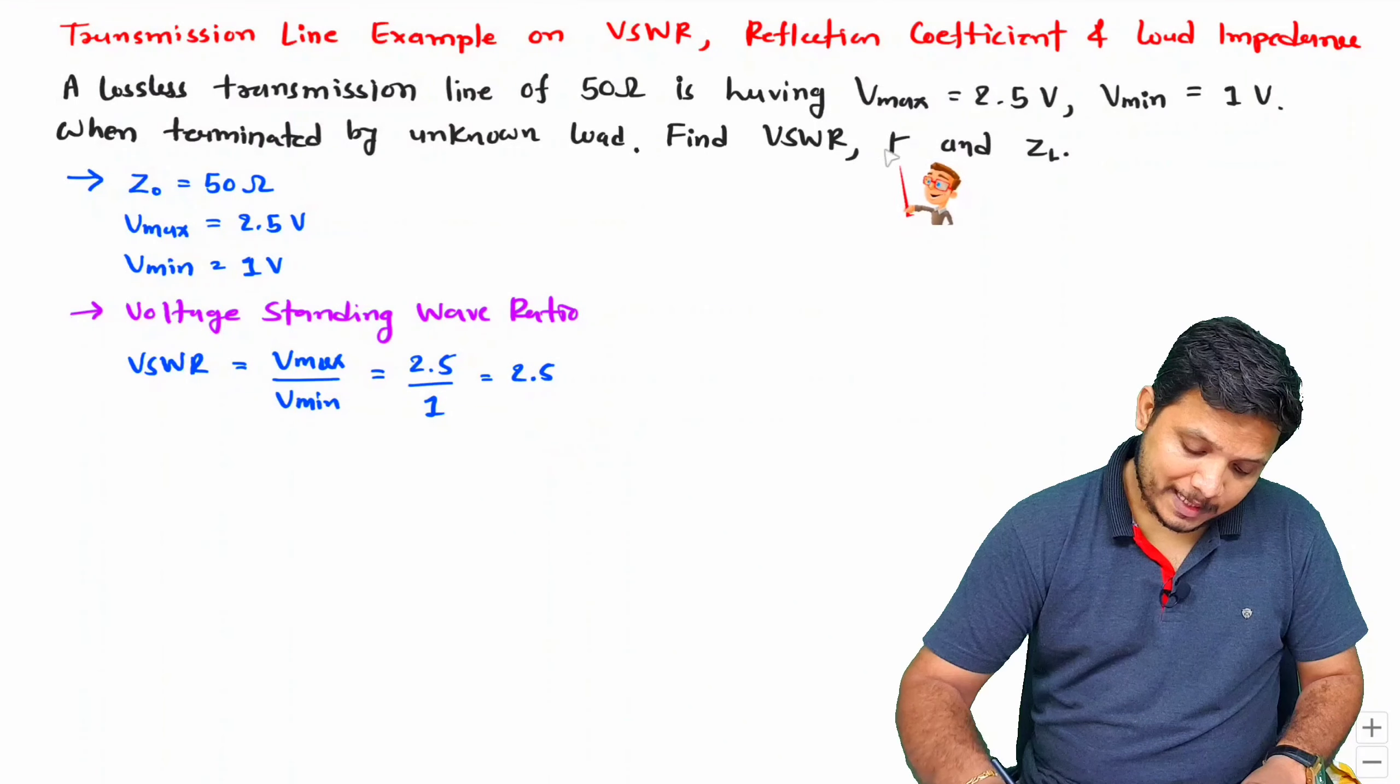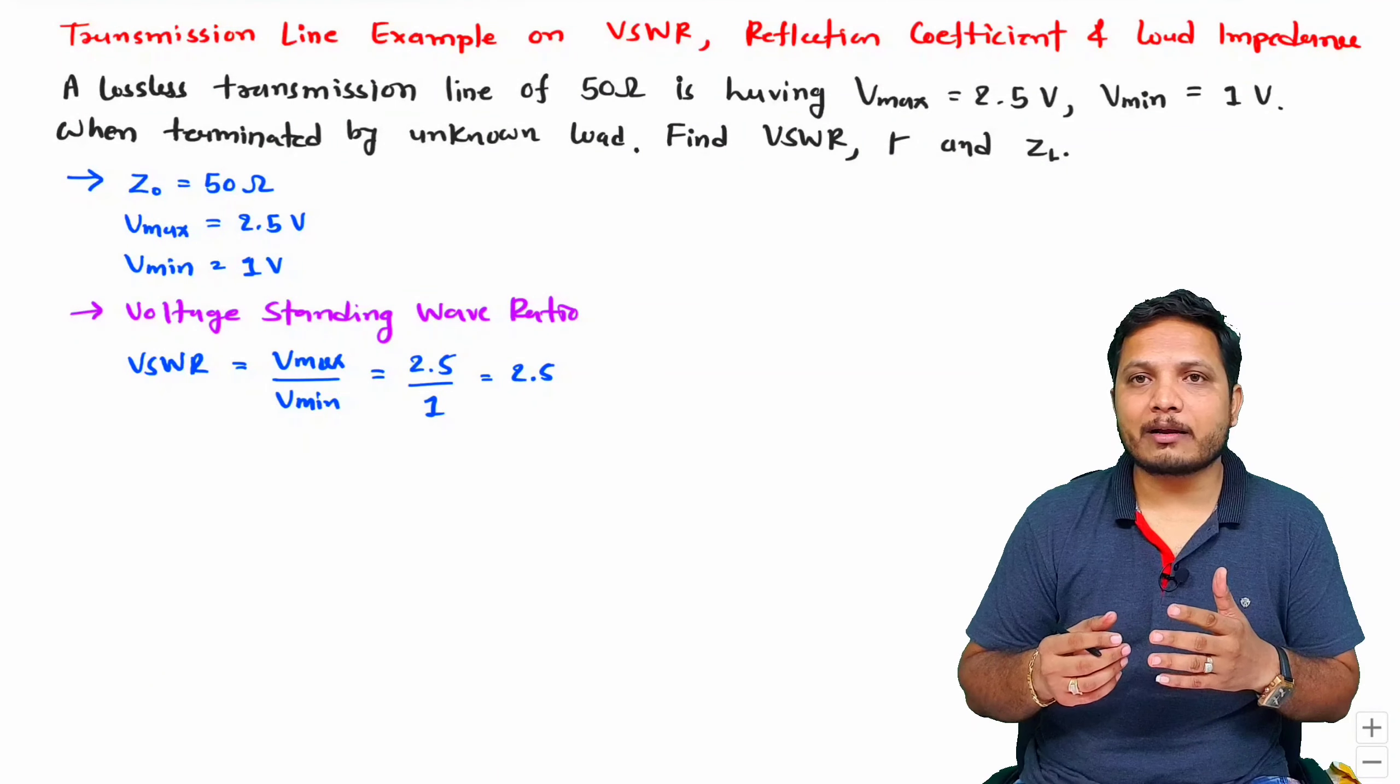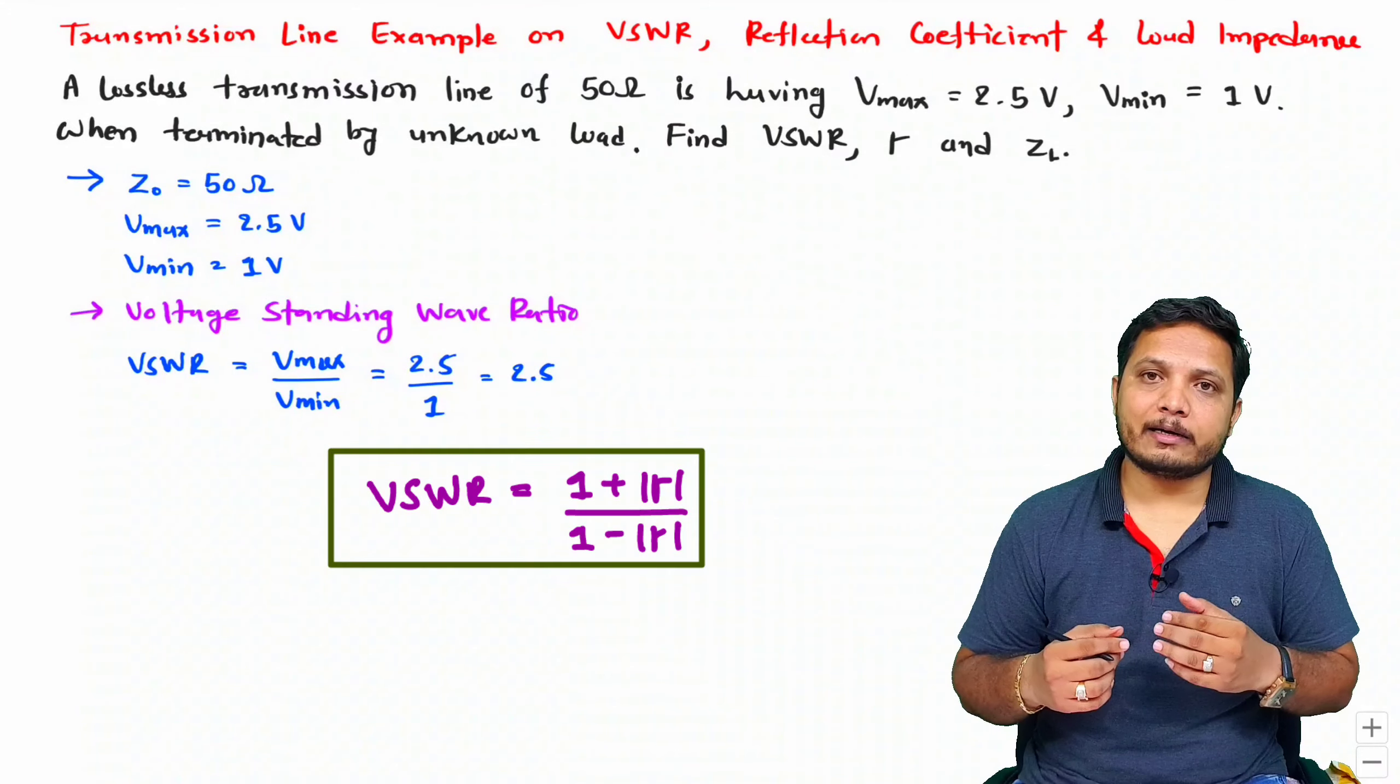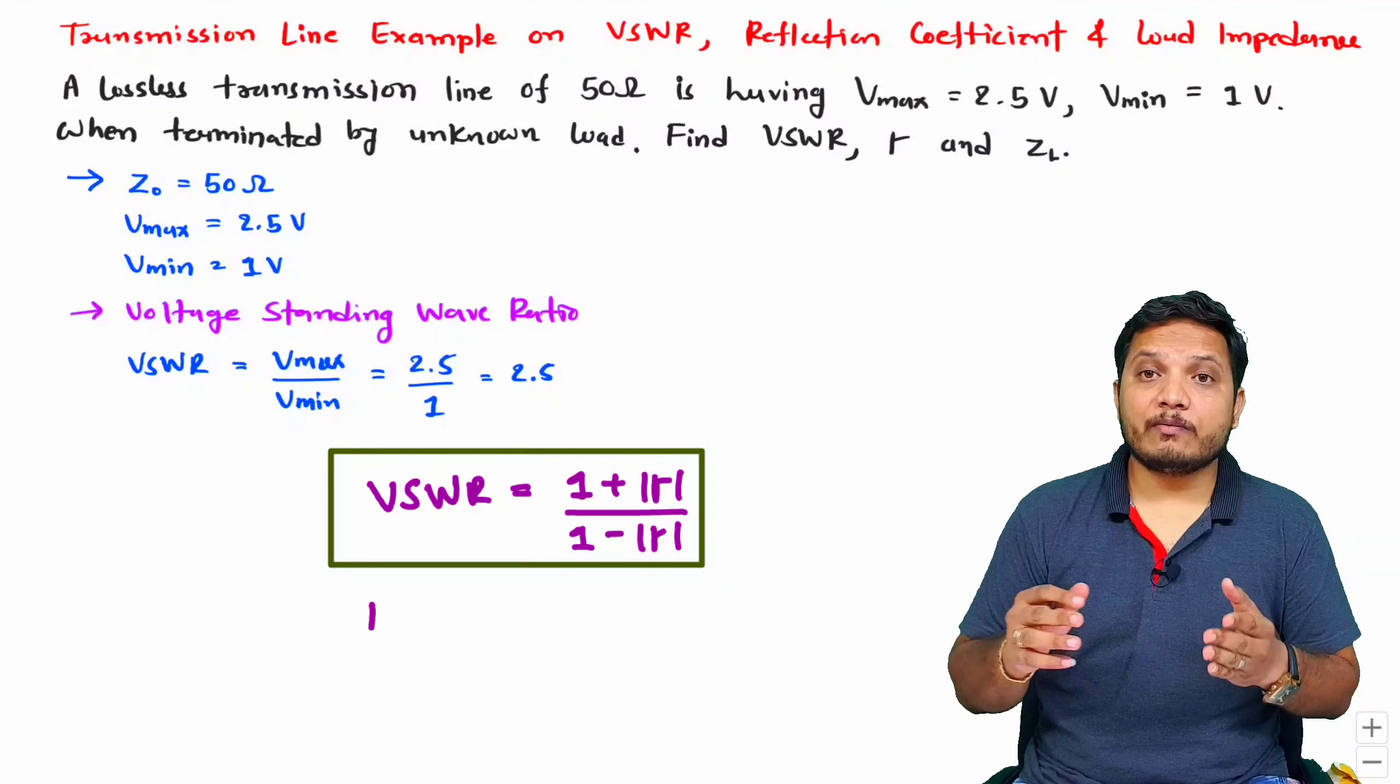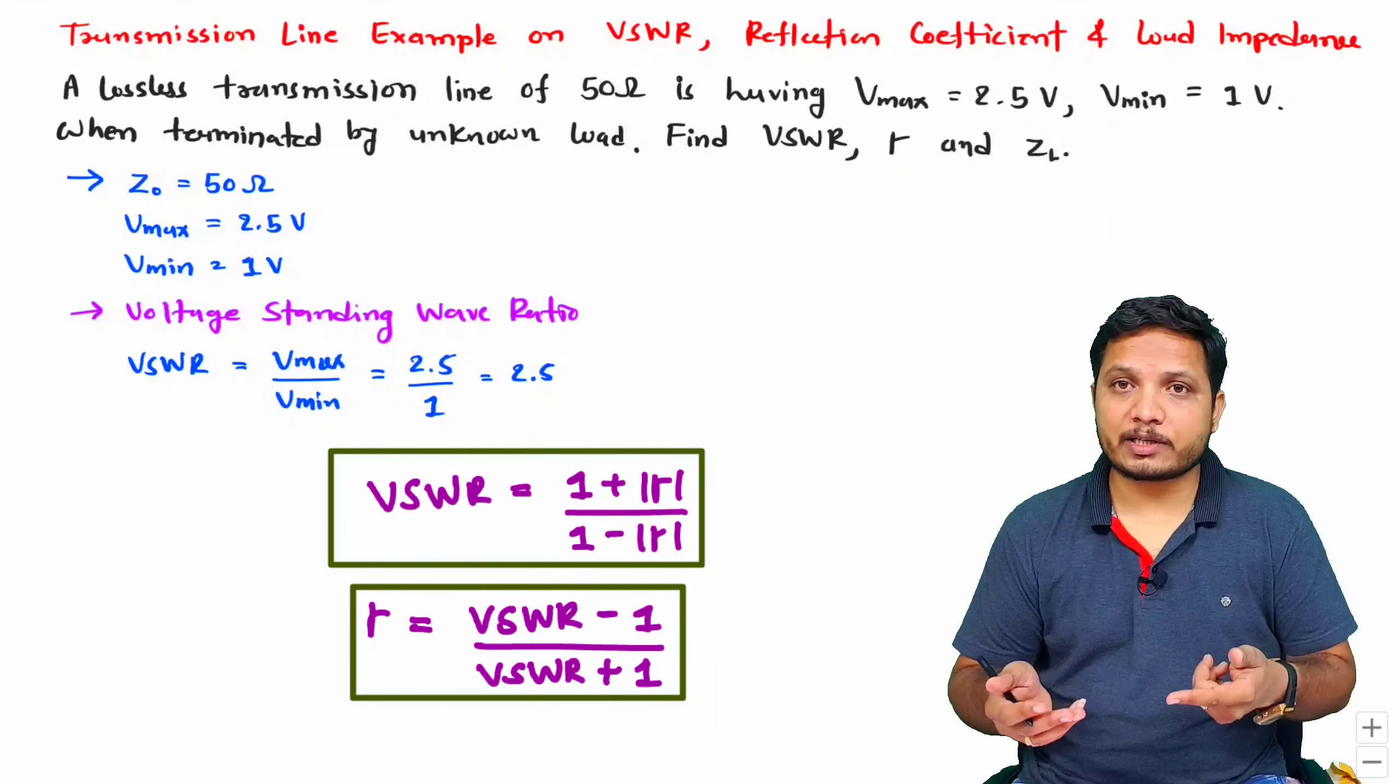Now the second parameter is reflection coefficient. We already derived the relation between VSWR and reflection coefficient: VSWR based on reflection coefficient is 1 plus mod of rho divided by 1 minus mod of rho. But if you want reflection coefficient from VSWR, then reflection coefficient will be VSWR minus 1 divided by VSWR plus 1. By placing VSWR, we can have reflection coefficient.